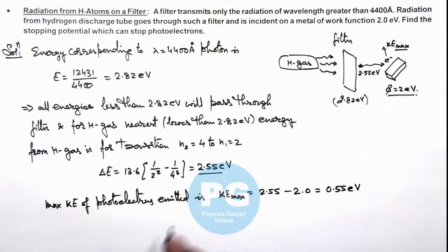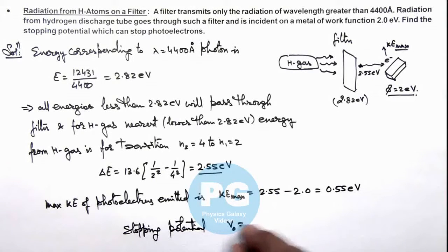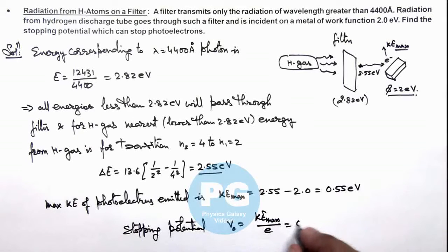We can directly write down the stopping potential required, which can stop these photoelectrons, as KEmax divided by e. So it is 0.55 electron volts divided by e, which is 0.55 volts. That is the result of this problem.